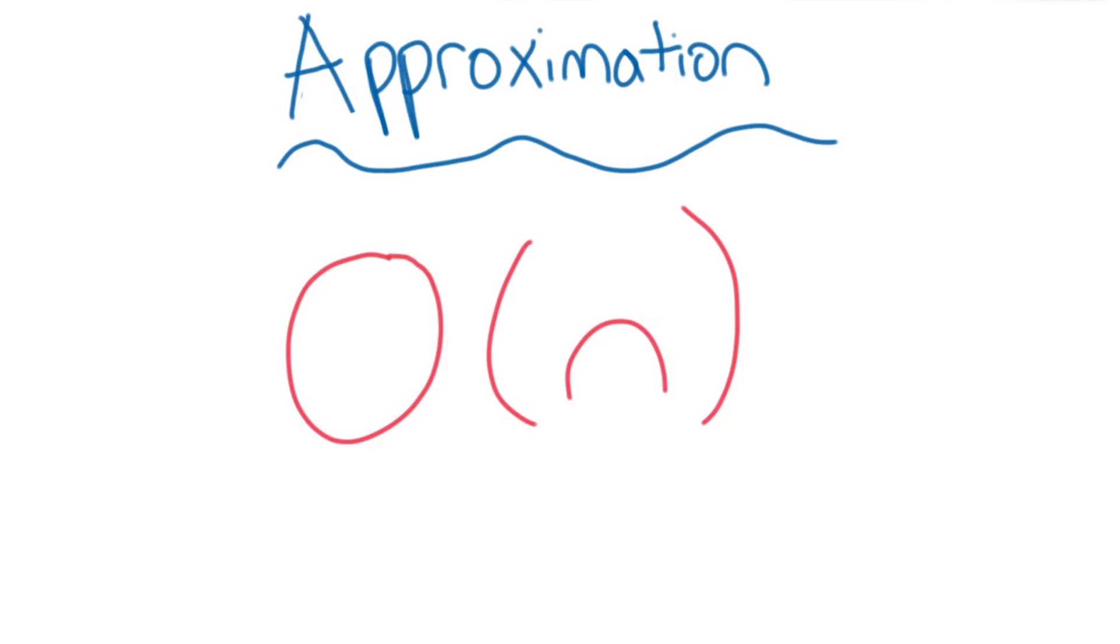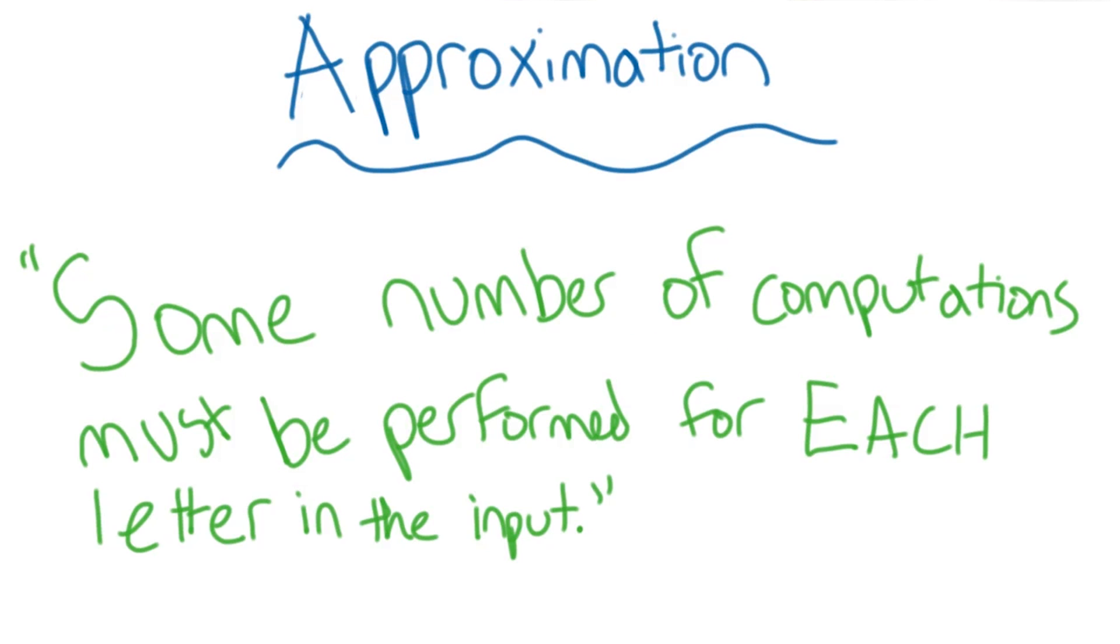By approximating, we're really saying some number of computations must be performed for each letter in the input. There's actually more things you should consider when using big O notation.